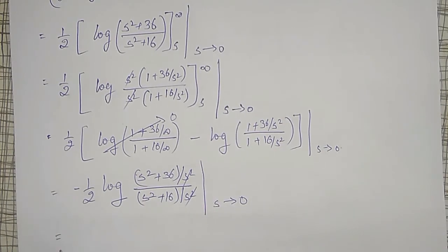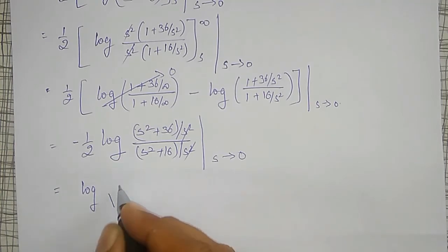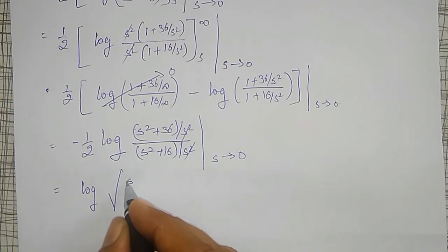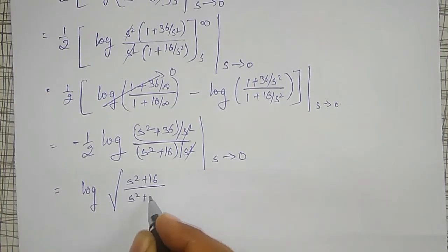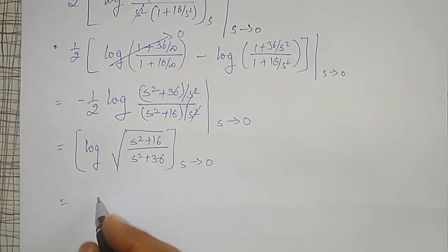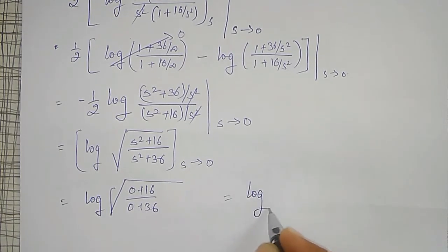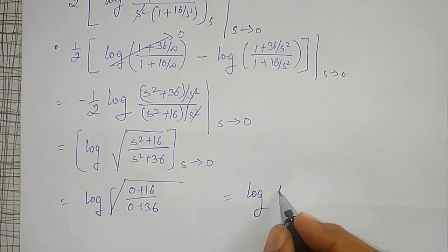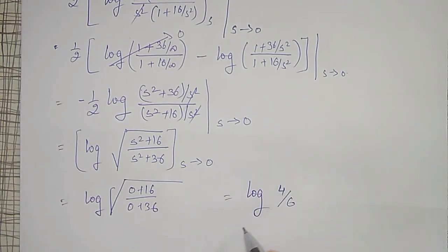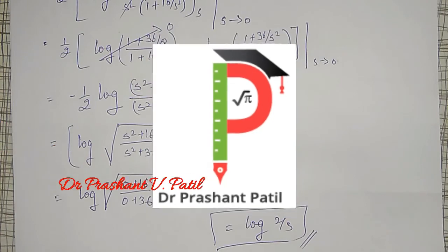Due to the minus sign and the factor 1/2, this can be written as log of the square root of (s²+16)/(s²+36). Replacing s by 0: log(√(16/36)) = log(4/6) = log(2/3). This is the required answer. Please subscribe to my channel, leave comments, and don't forget to hit the like button. Thank you, friends.